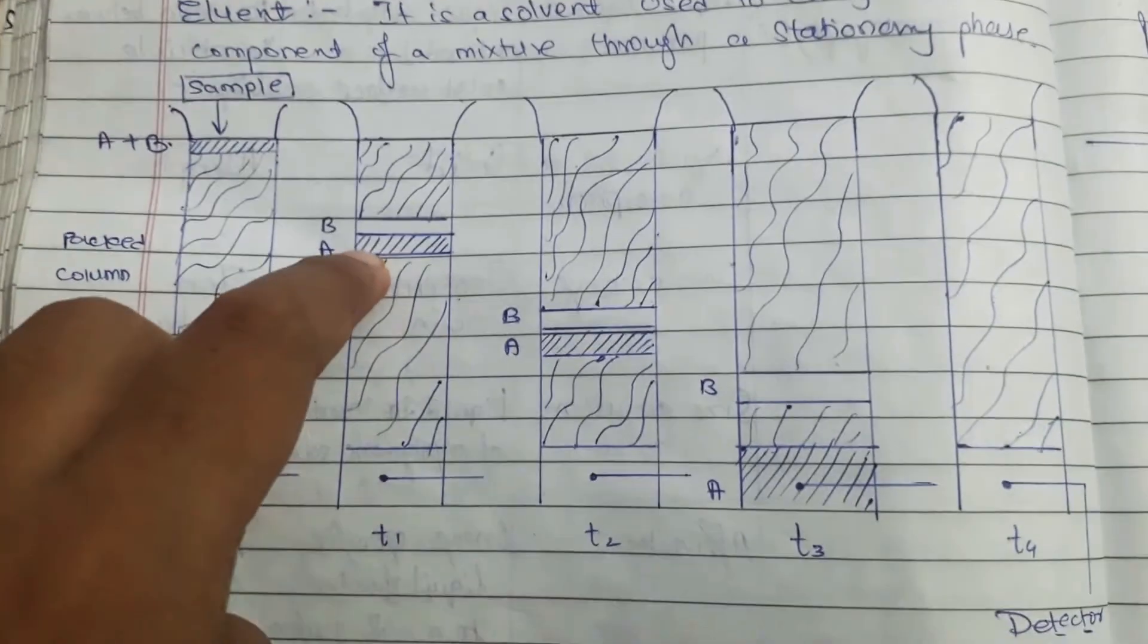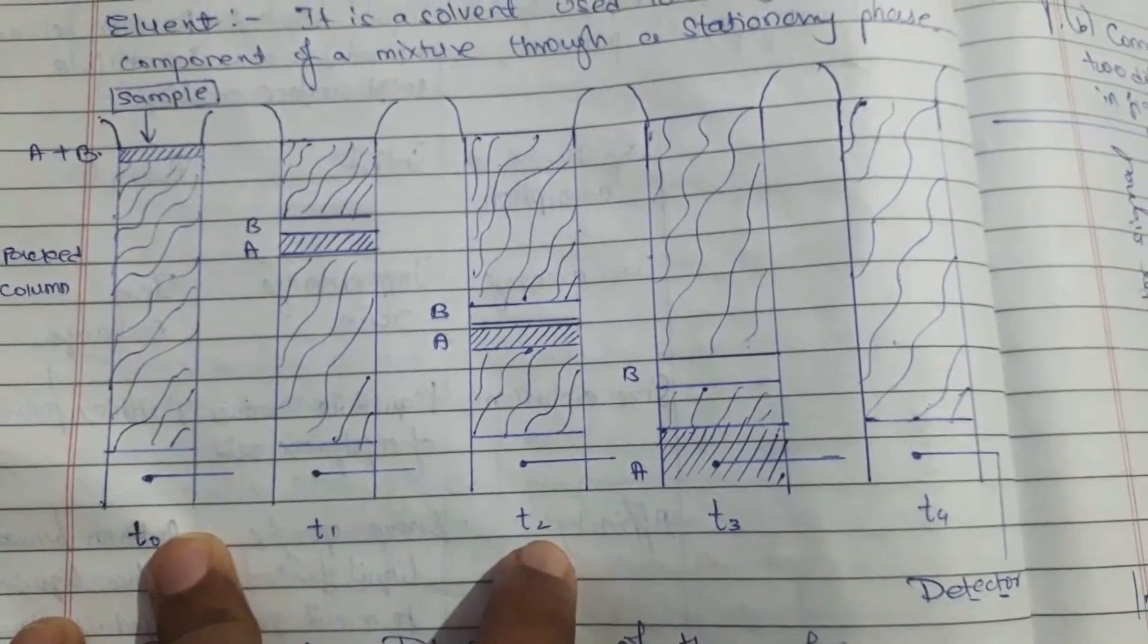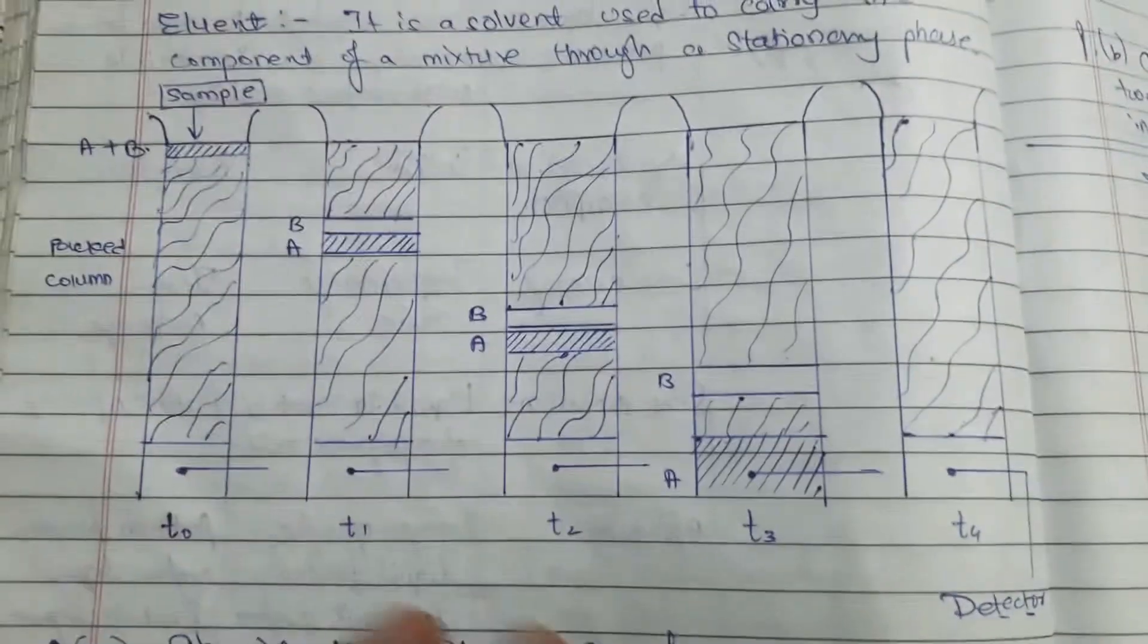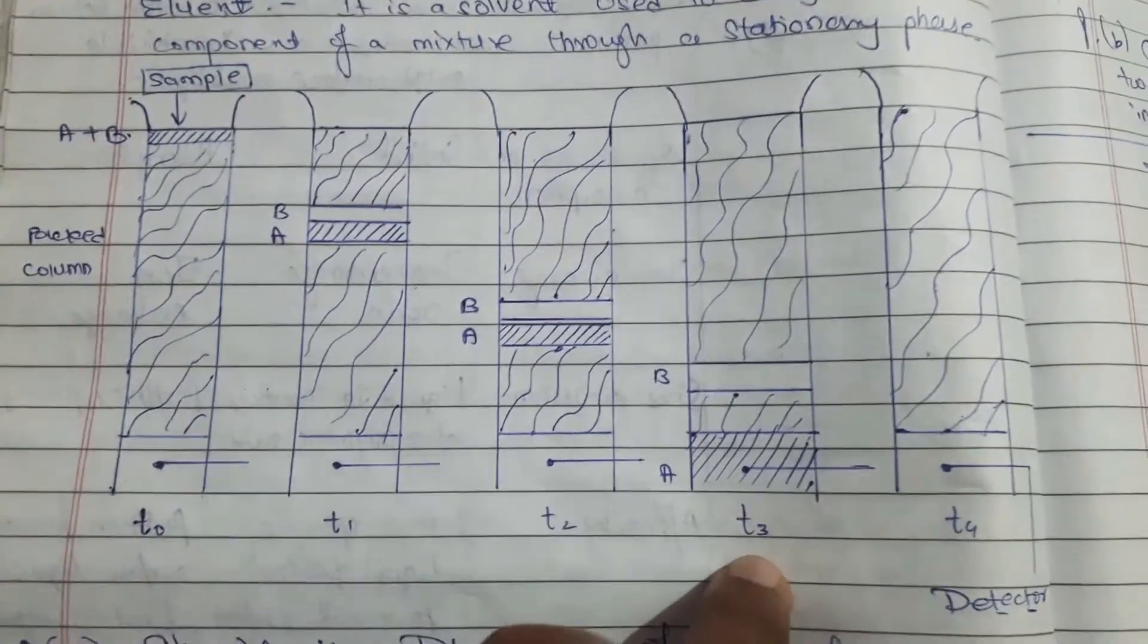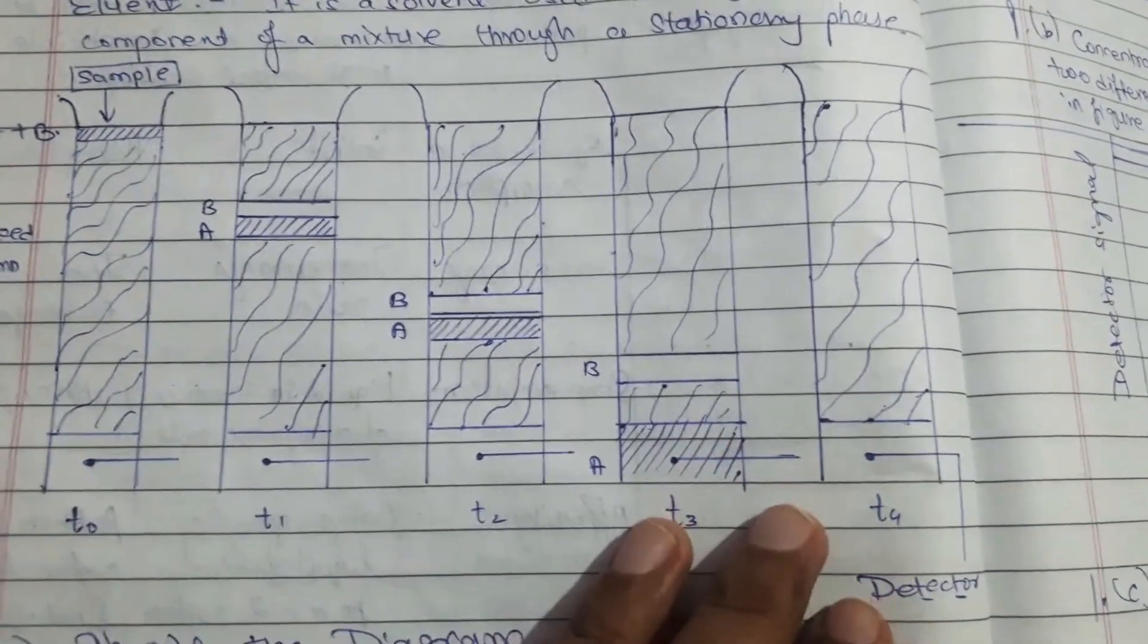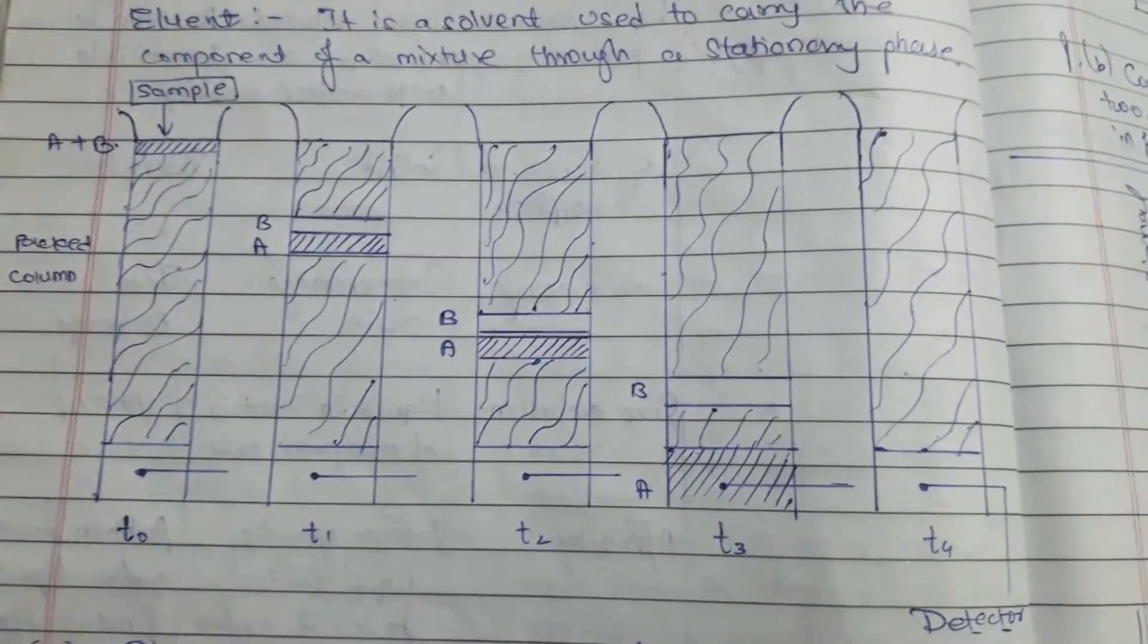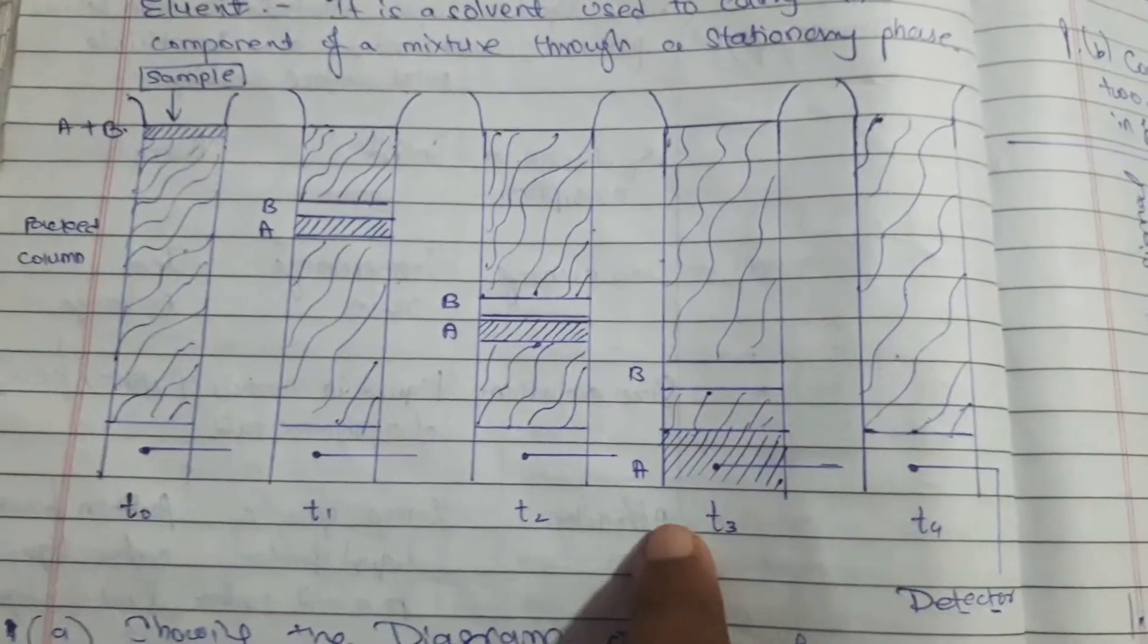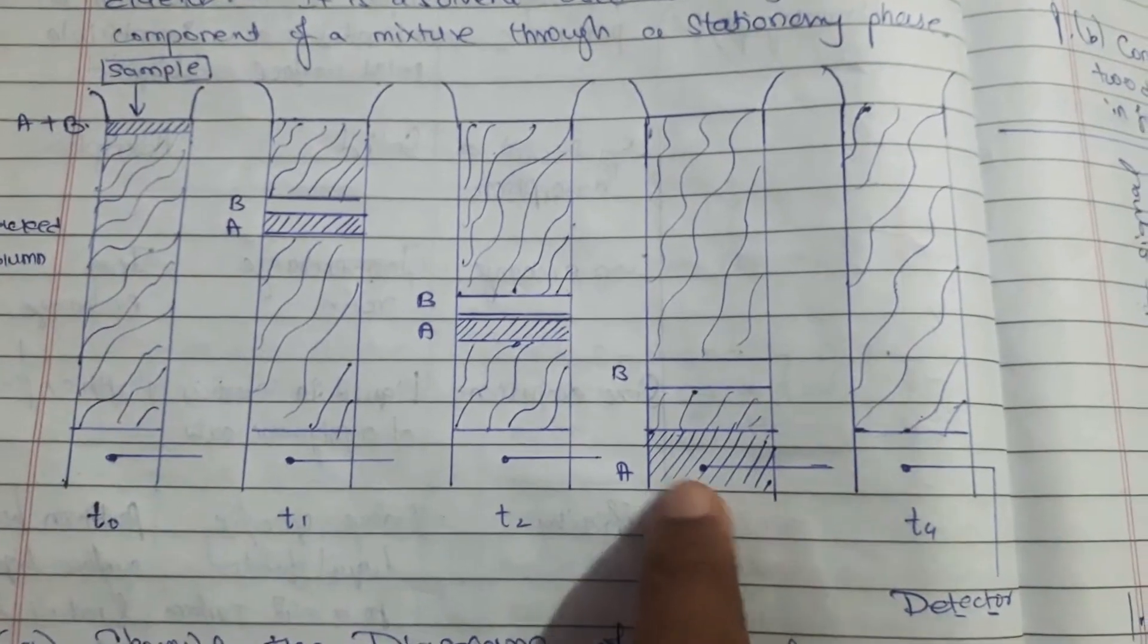At time t2, both components A and B get further separated from each other. Now at time t3, component A will elute first, then component B.